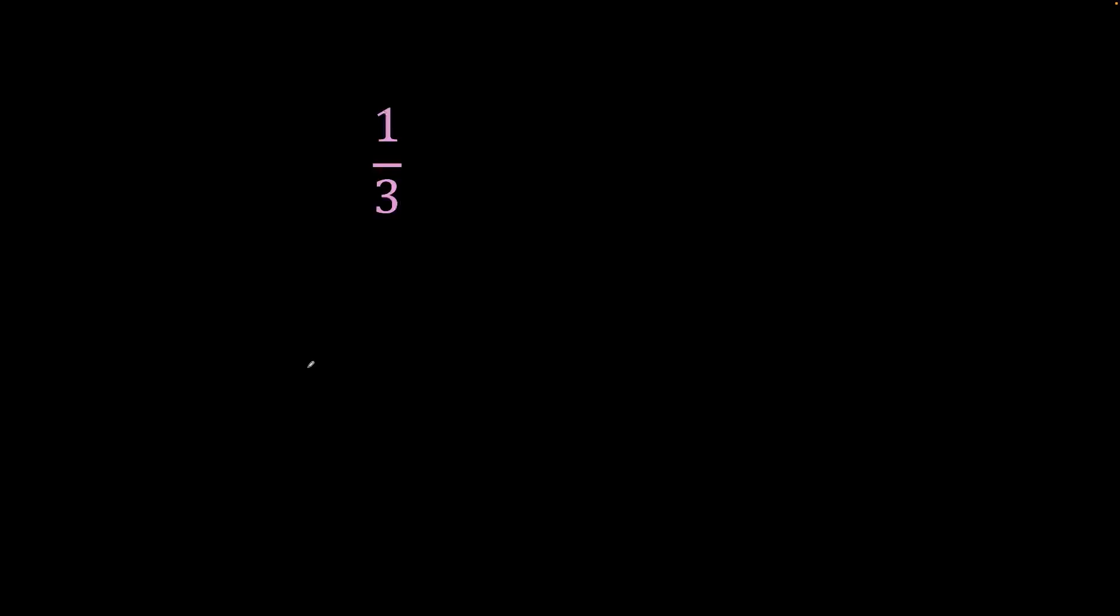If you take 1 by 3 and try to add 0, let's try and see what happens. 1 by 3 plus 0. If you take LCM, which is 3, we get 1 plus 0 by 3. That would give you 1 plus 0 is 1, so 1 by 3. So you get back the original number 1 by 3.